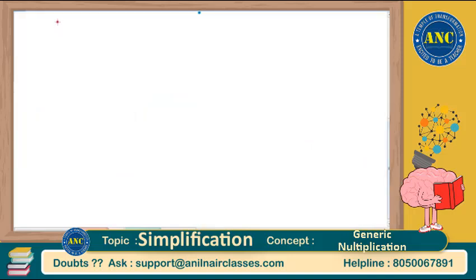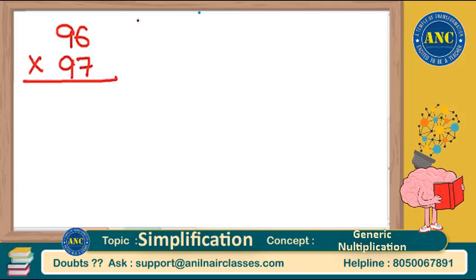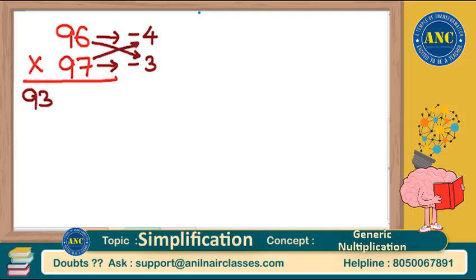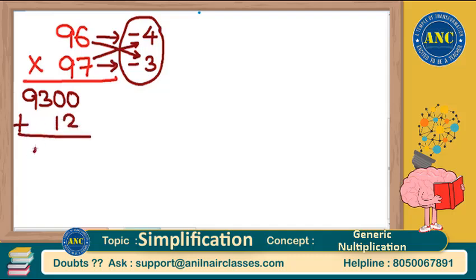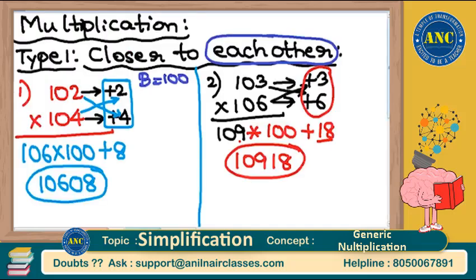Now an example where both numbers are less than 100: 96 into 97. 96 is 4 less than 100, 97 is 3 less than 100. Cross: 96 minus 3 is 93. 93 into 100 is 9300. Multiply: minus 4 into minus 3 is plus 12. Answer is 9312.